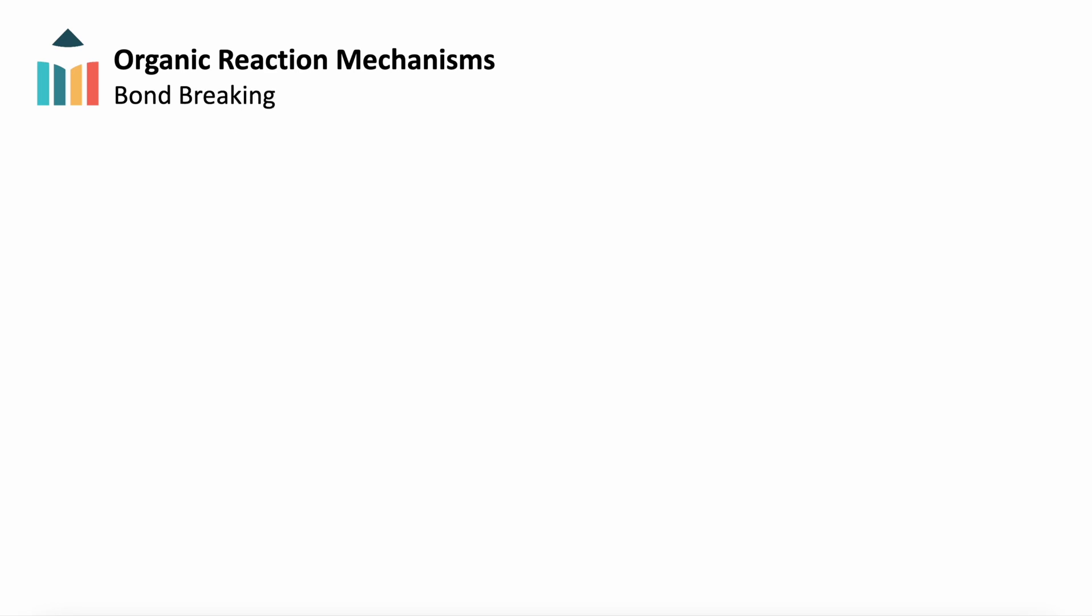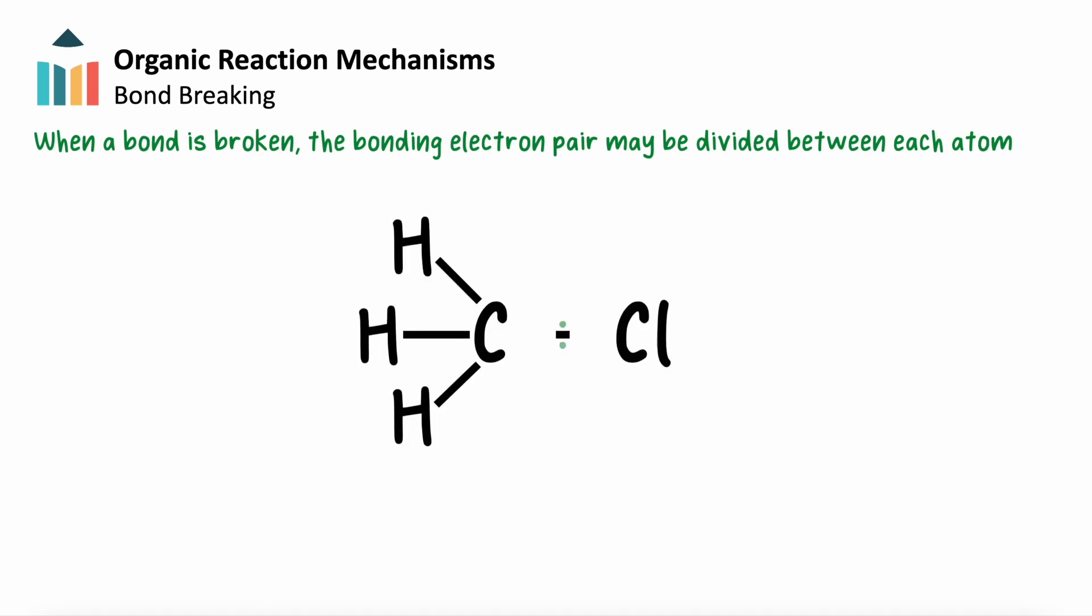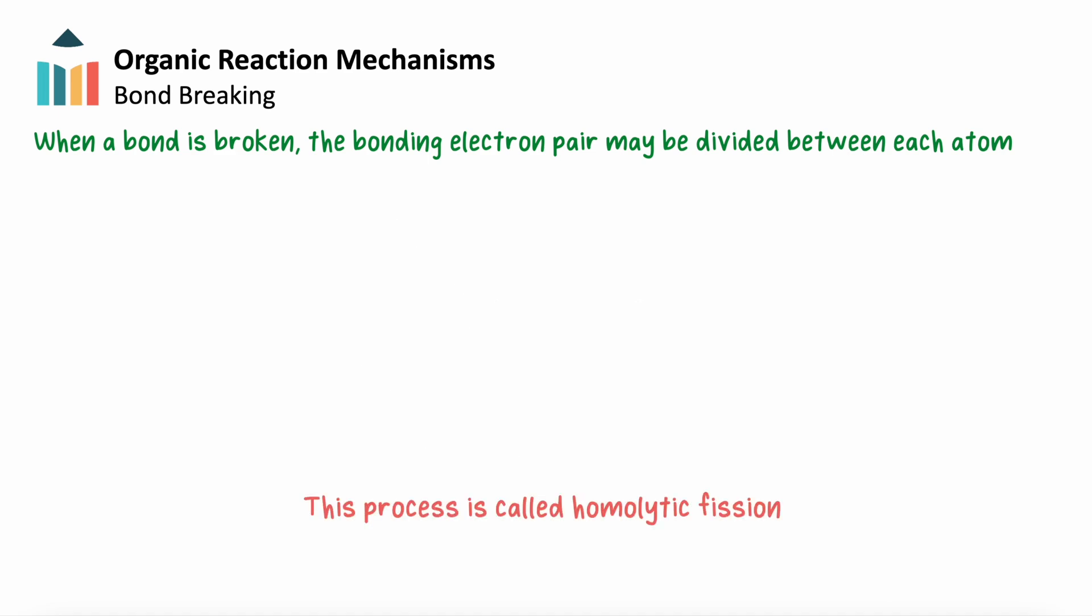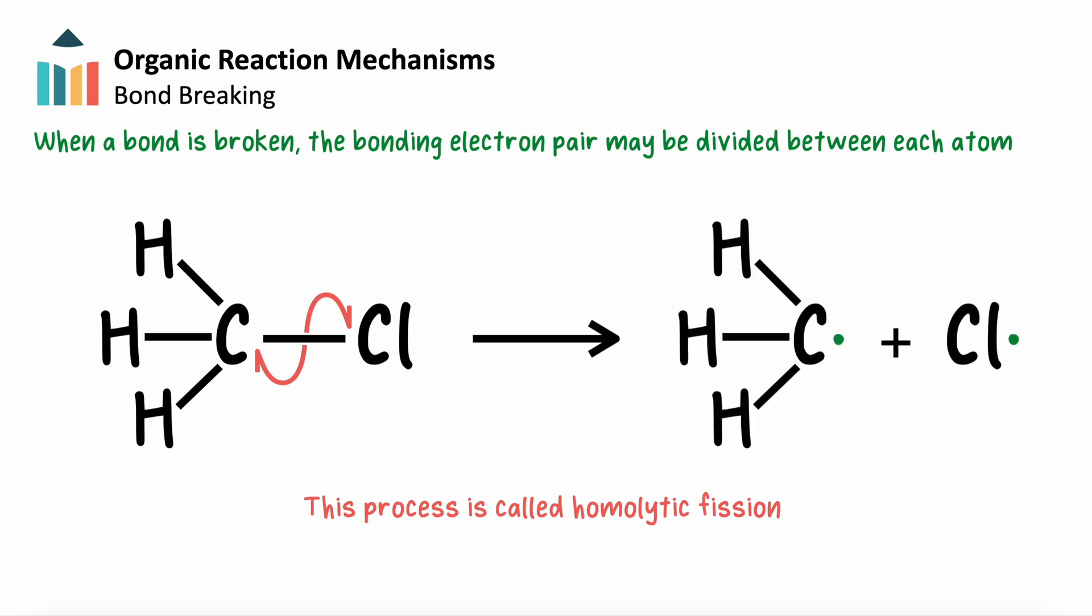When a bond is broken, the bonding electron pair may be divided between the two atoms in the bond, where each atom receives one unpaired electron, making it radical. This process is called homolysis, or homolytic fission, and is indicated by two half-arrows, drawn from the bond to each of the bonded atoms.